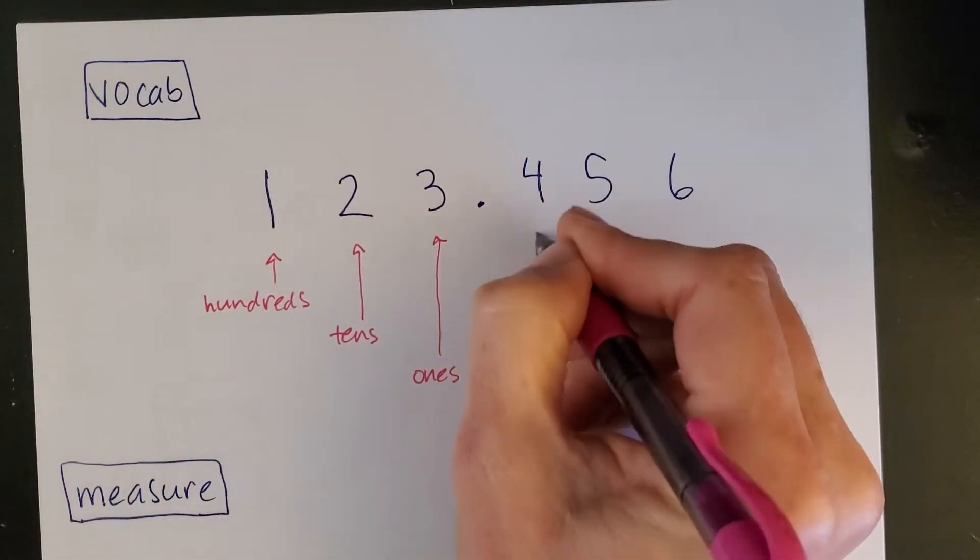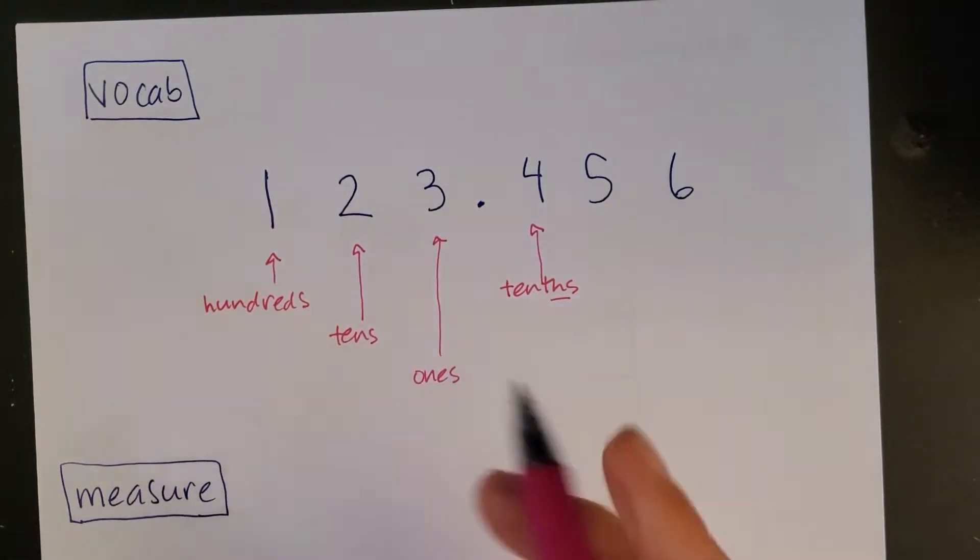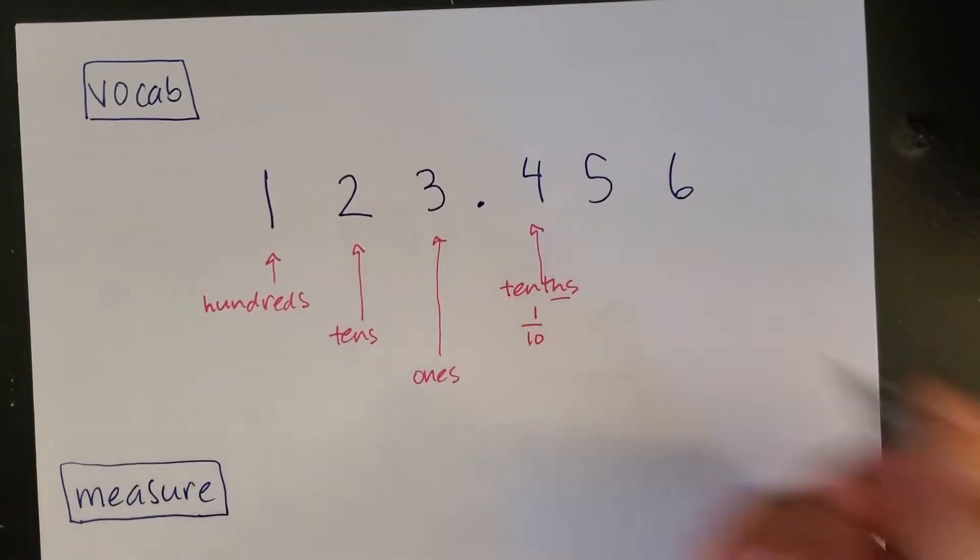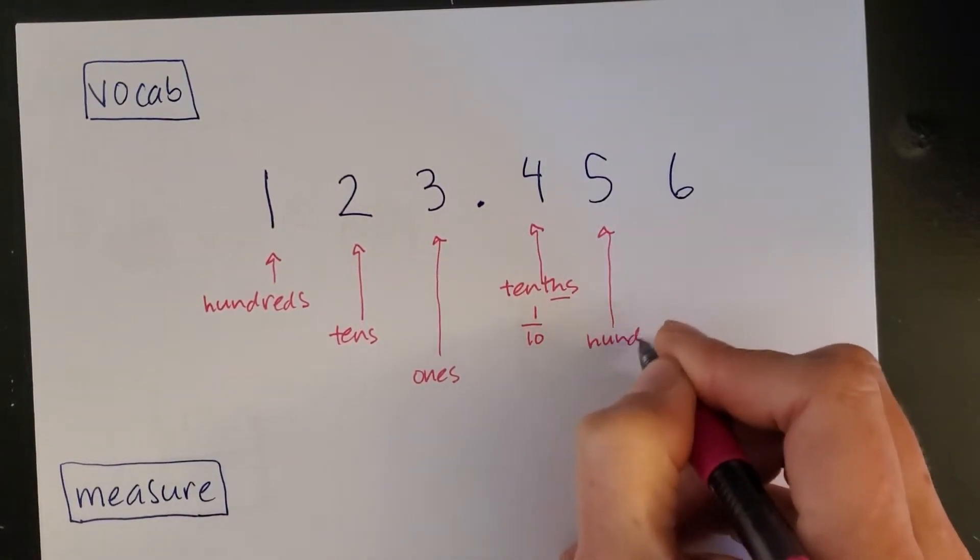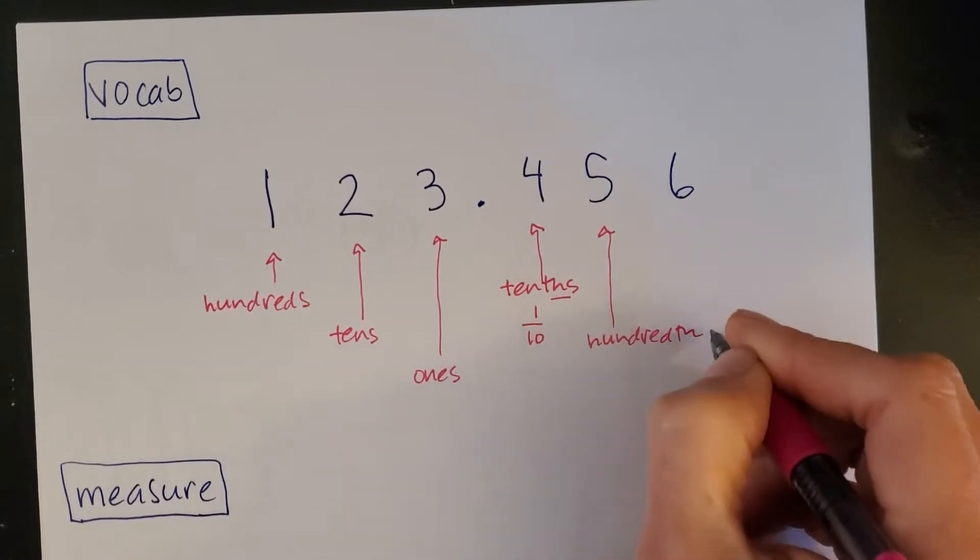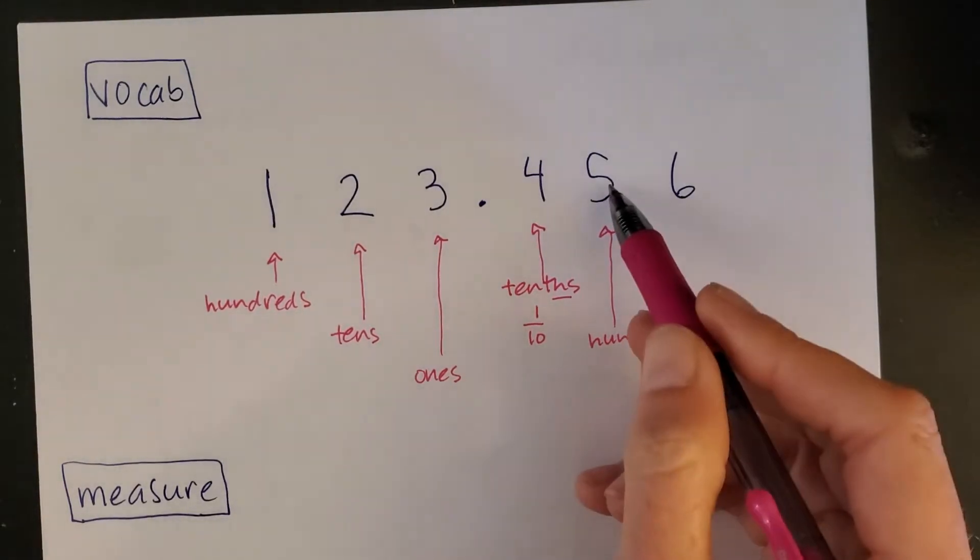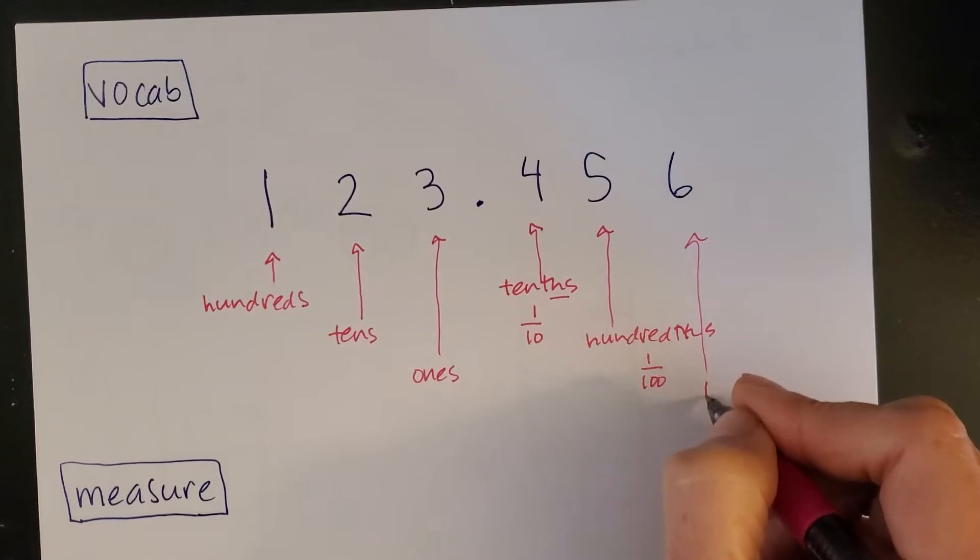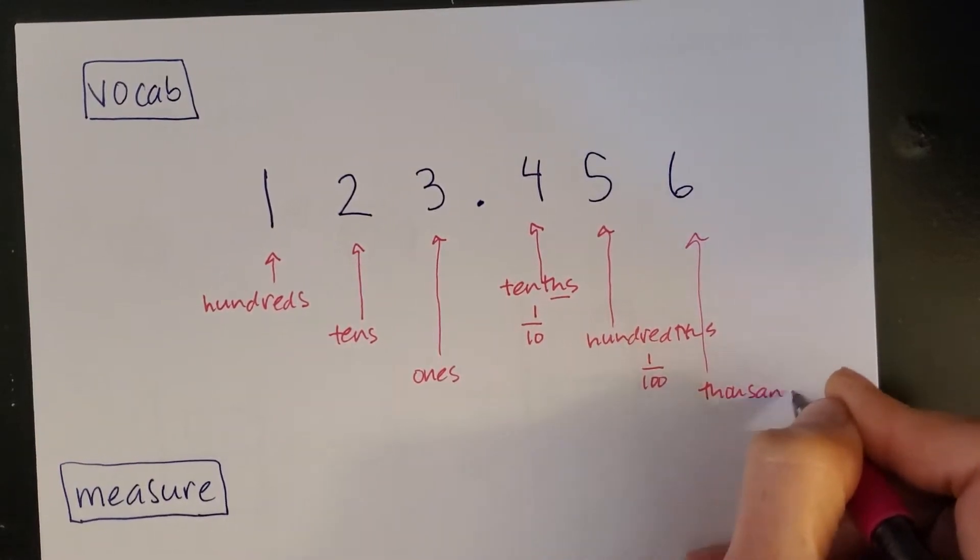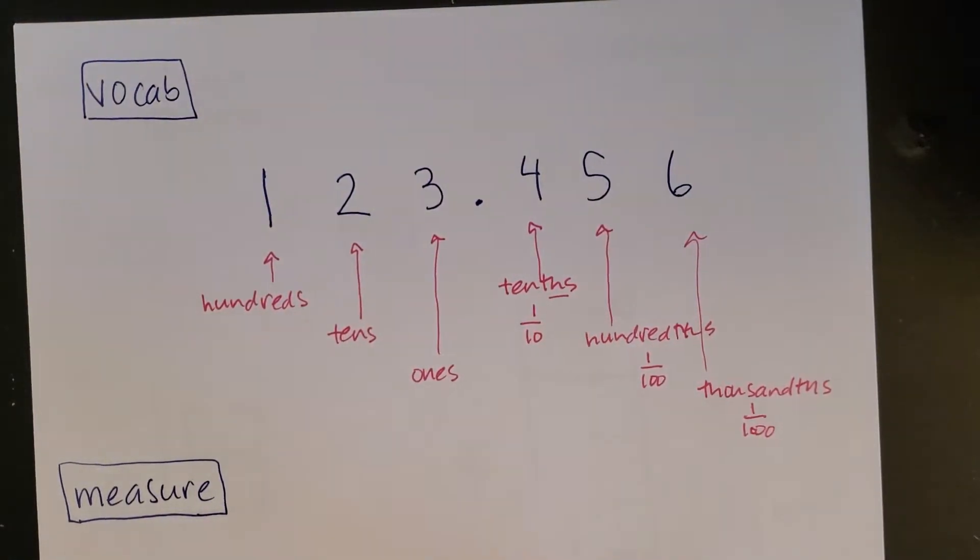Here the four we would say is in the tenths place. Notice tenths versus tens, and a tenth is the same as saying one over ten. Next up the five is in the hundredths place, and that's one over one hundred, or five hundredths for example. And then finally, I don't know that we'll really go this small, but this would be called the thousandths place, and that would be one over a thousand. So we'll be talking about these decimal places as we do some measurement.